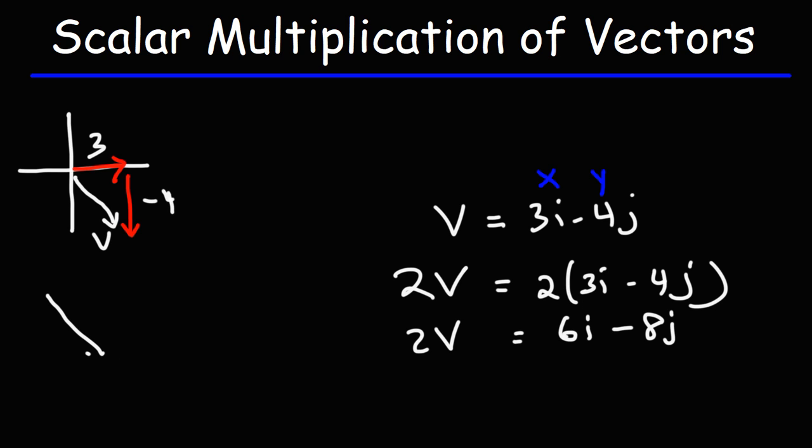And then the hypotenuse of this triangle would represent the vector V. So this is V. Now, if we multiply V by 2, it's going to double in length. So that's 2V. So that's the scalar multiplication of vectors.